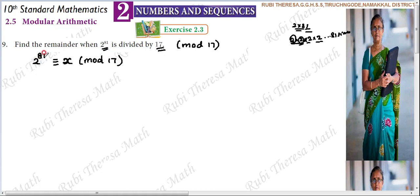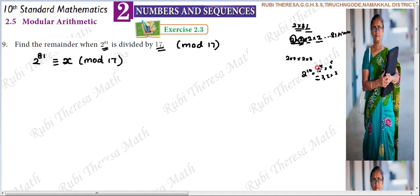2 power 81 is the dividend. I have to find the remainder when this number is divided by 70. We can evaluate 2 power 10 as 2 power 5 into 2 power 5, which is 32 into 32. We know that 2 power 5 is 32, and 2 power 4 is 16. We can identify these values and multiply.